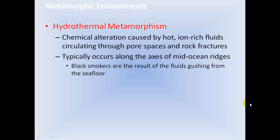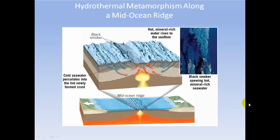Hydrothermal metamorphism involves chemical alteration caused by hot, ion-rich fluids circulating through pore spaces and rock fractures. It commonly occurs along the axes of mid-ocean ridges. A black smoker is the result of fluids gushing from the seafloor — spewing hot, mineral-rich seawater.